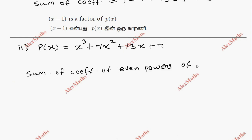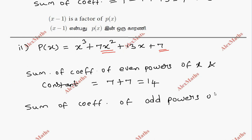Even powers of x and constant term. So even power of x is the x square term and constant term. So total 7 plus 7 is 14. Sum of coefficient of odd powers of x is equal to x cube and 13x term.